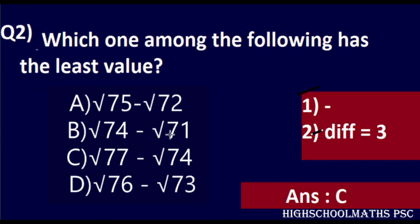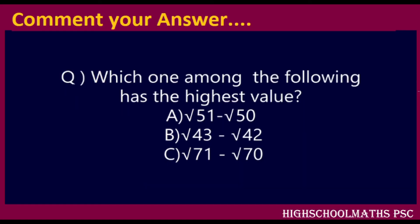Now, you have to think about this trick in a calculator. √75 − √72, √74 − √71 — if you have any values, you will check the standard condition. If you have any questions, we will answer the first question. Which one among the following has the highest value? The least value is the highest value.